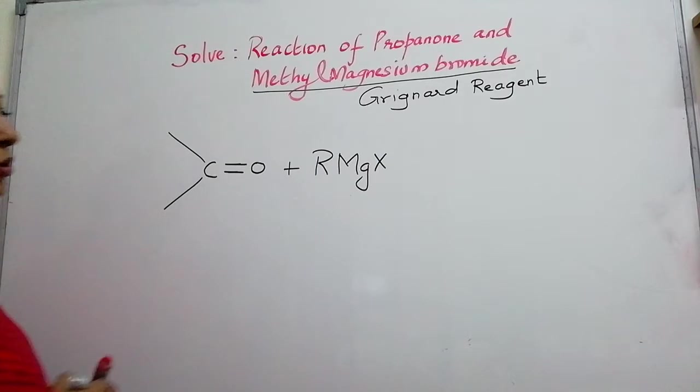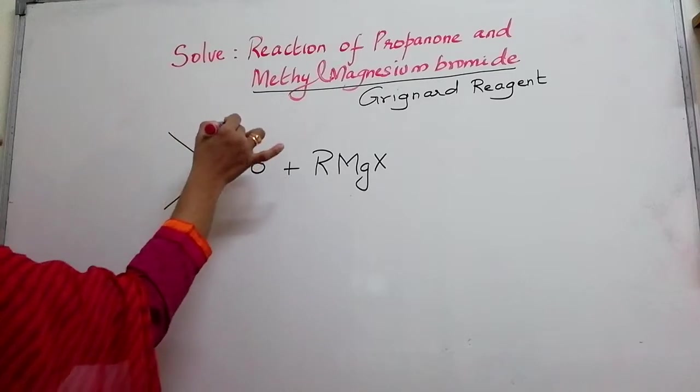R is an alkyl group, Mg is magnesium and X is a halide. What you should do first? We all know that there is a mechanism but I am going to teach you a shortcut way that is first break the double bond.